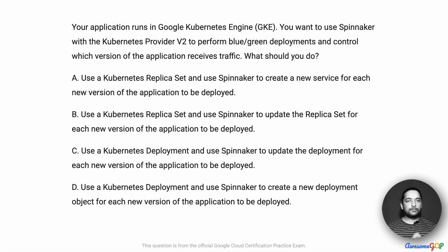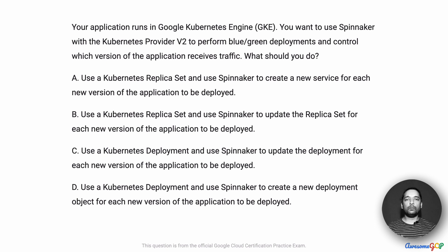In this project scenario, your application runs in Google Kubernetes Engine or GKE. You want to use Spinnaker with the Kubernetes provider V2 to perform blue-green deployments and control which version of the application receives traffic. What should you do?